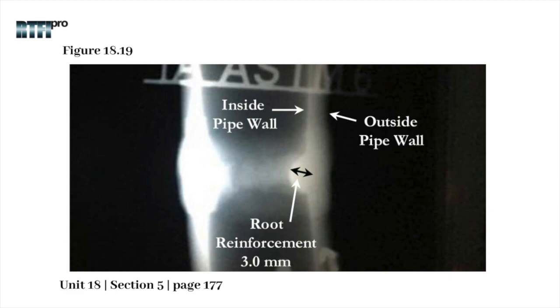One can also verify if any magnification has occurred by measuring the distance from the left side of the outside wall to the right side of the outside wall, and comparing it to the outside diameter of the pipe.